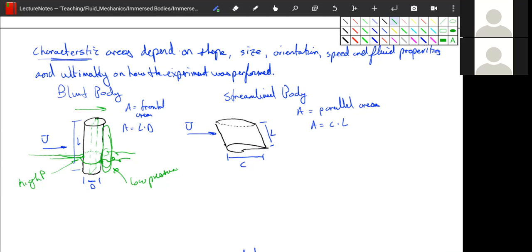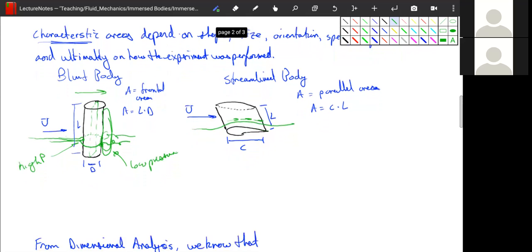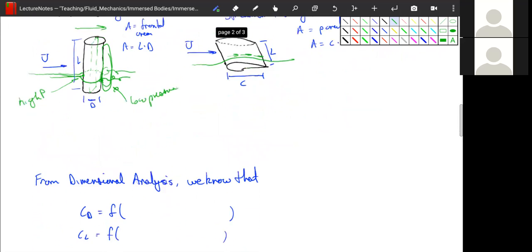The opposite is true of a streamlined body. For a streamlined body, we have shear force dominating. So we have streamlines coming around like this and we care about the shear stress that they produce on the object. And so the total top and bottom area is what matters the most. So experimentalists choose a parallel length when shear stress dominates and they choose a perpendicular area when pressure dominates.